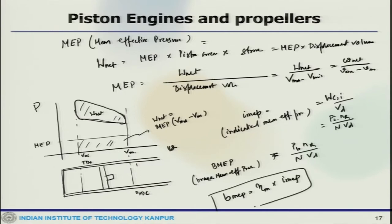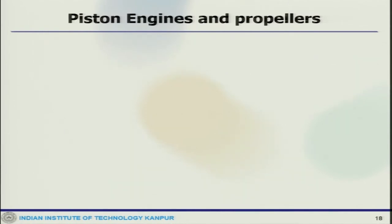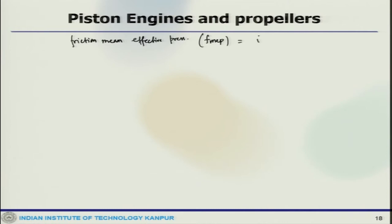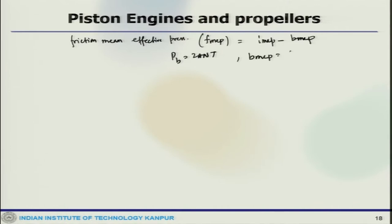We can also define Friction Mean Effective Pressure: FMEP equals IMEP minus BMEP. And we have P_B equals 2 pi N T, so BMEP is 2 pi T N_R by V_D.